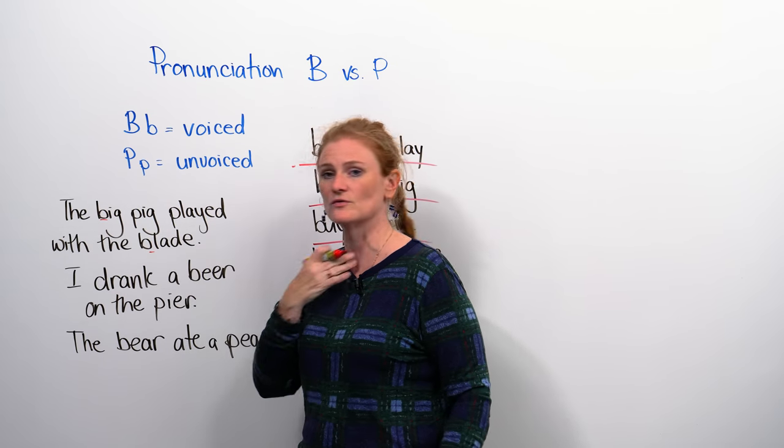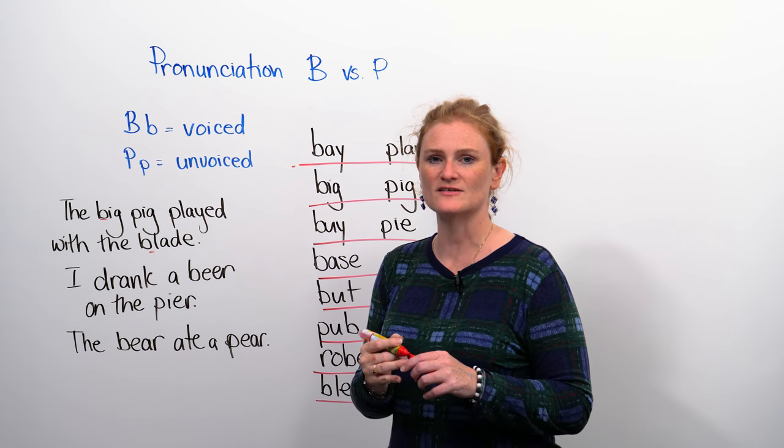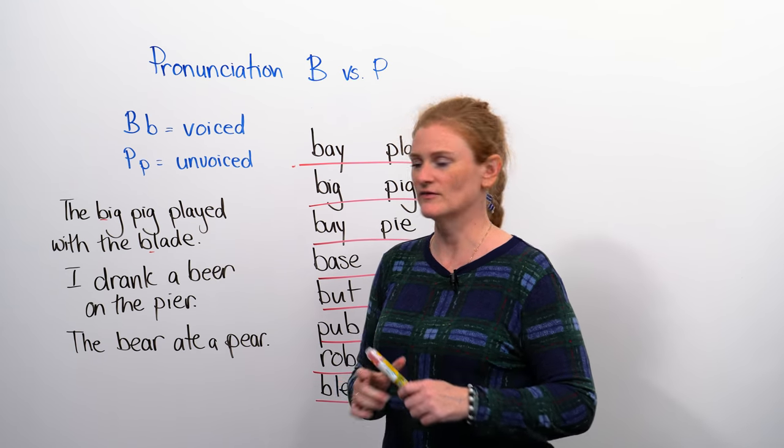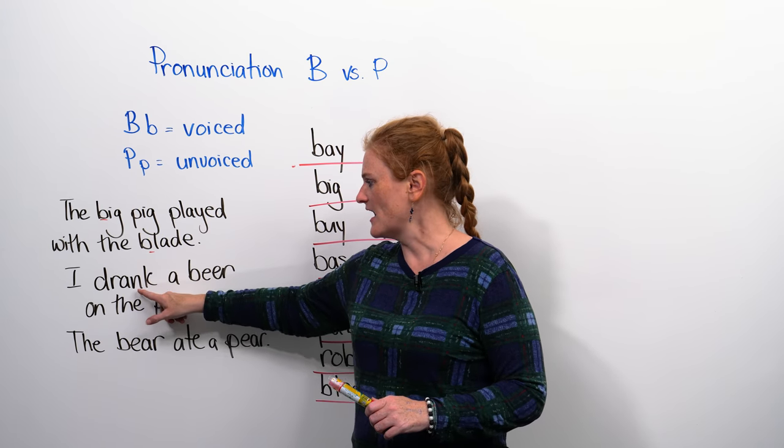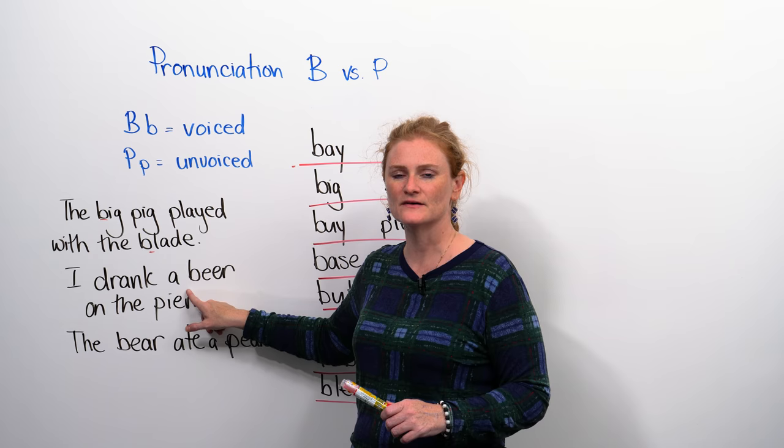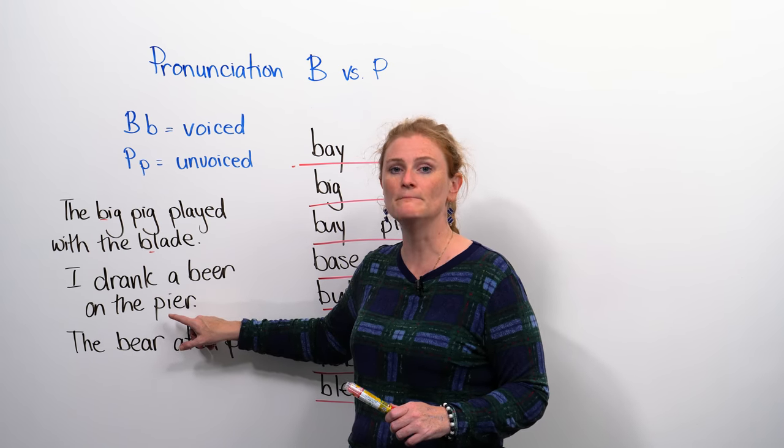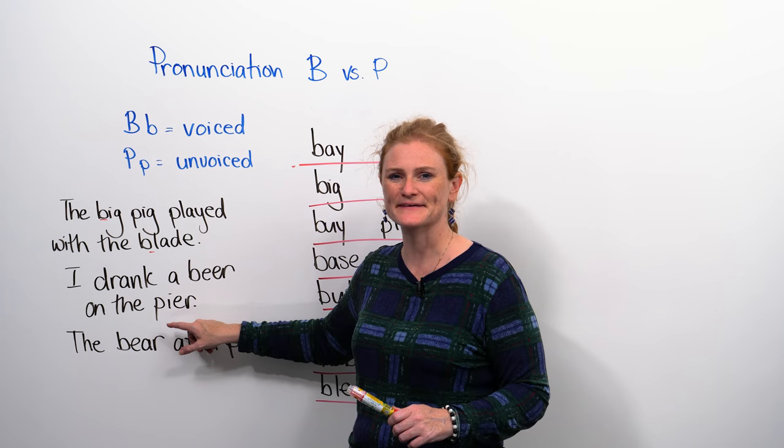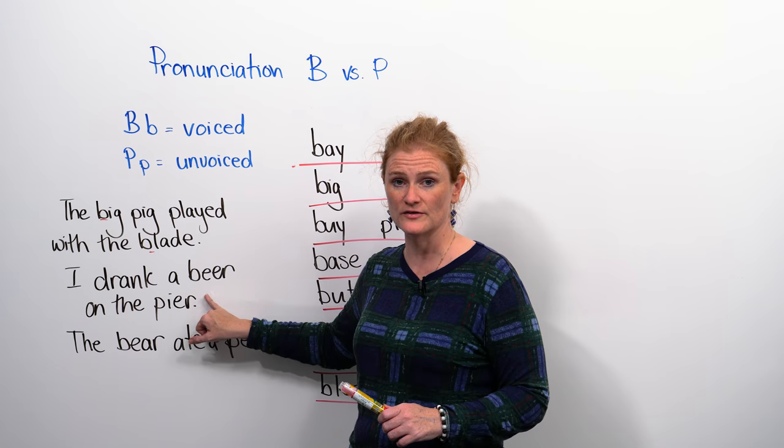And so again, the B sounds are always going to be vibrated, and the P sounds are not going to have a vibration. Next one. I drank a beer on the pier. I drank a beer on the pier. So we have two words that are minimal pairs in a sentence.